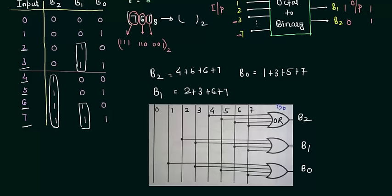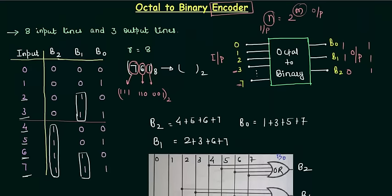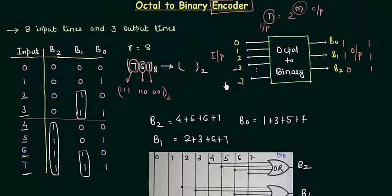So this is all that you need to know about the octal to binary encoder, a very simple topic. Similarly, you can implement the hexadecimal to binary encoder. In place of 3 bits, you are going to require 4 bits. That we will see in the next presentation.